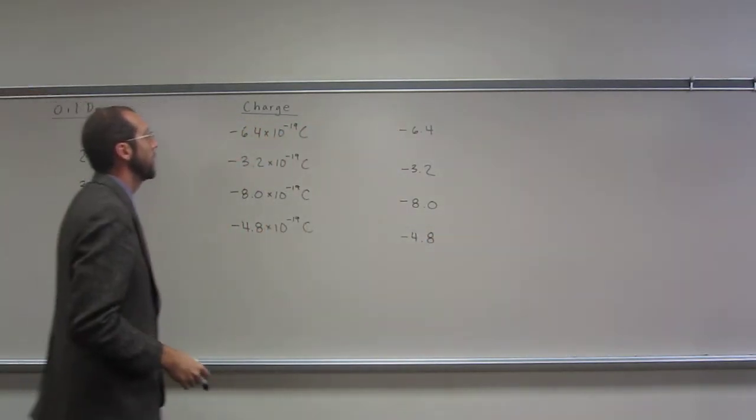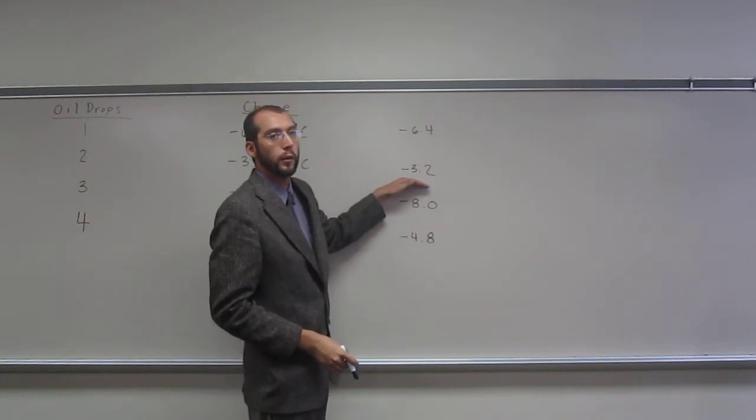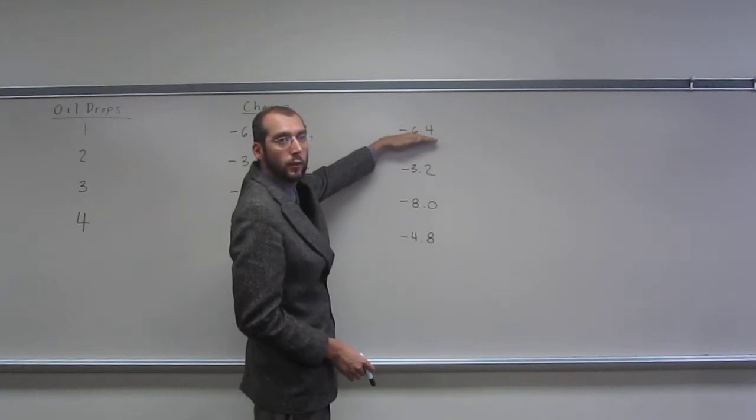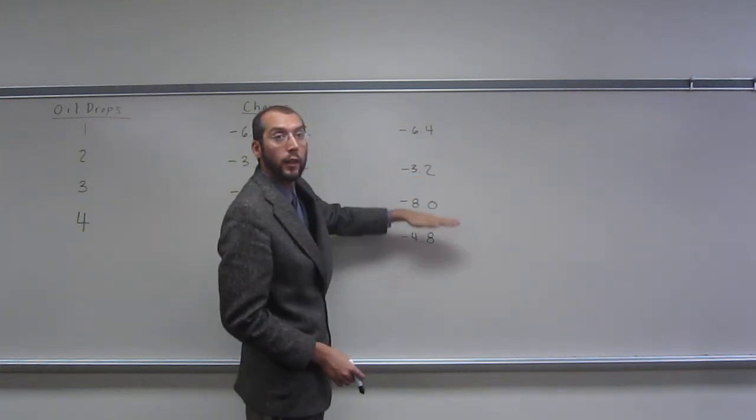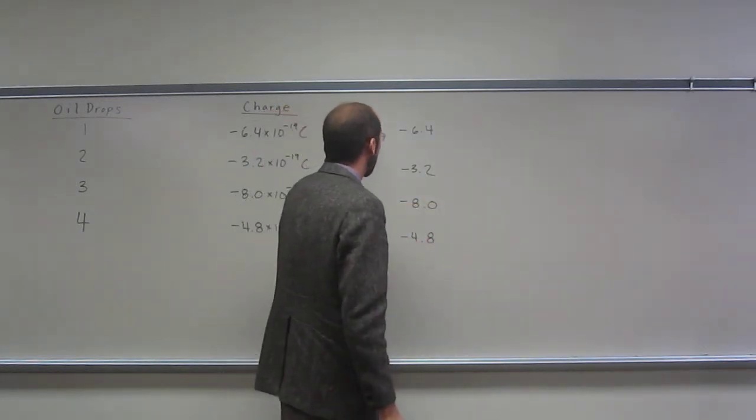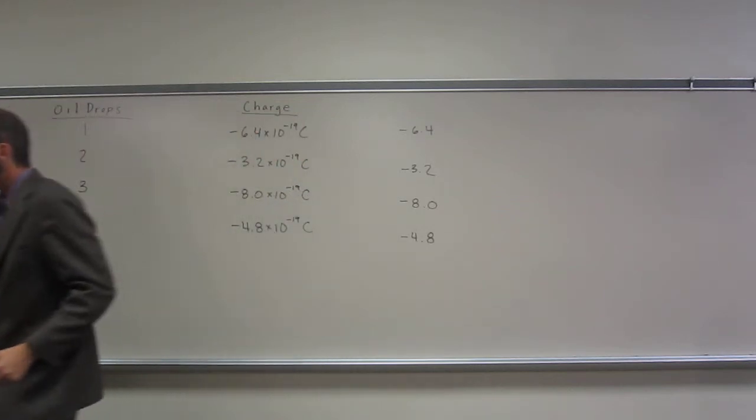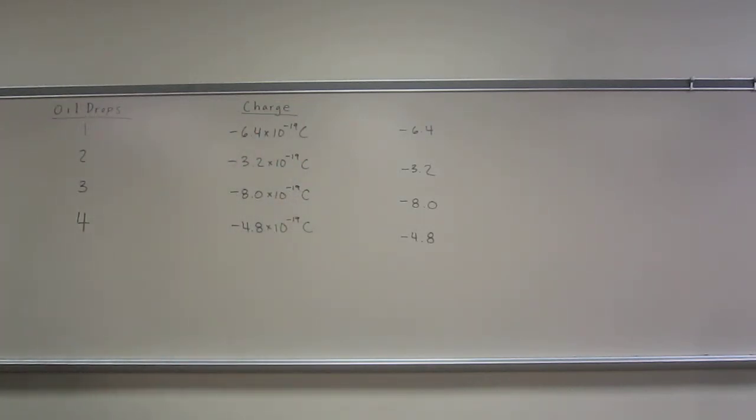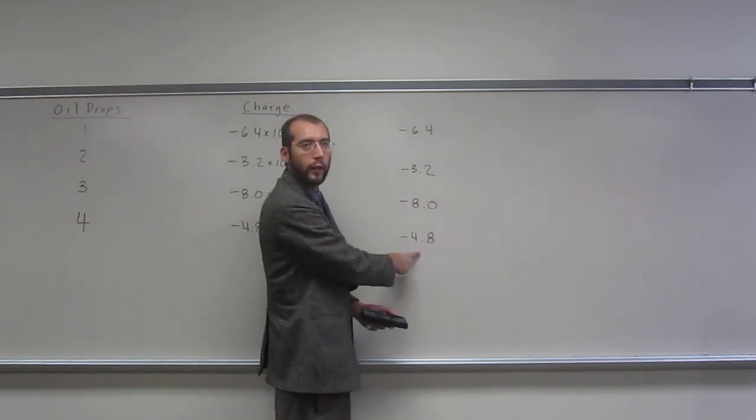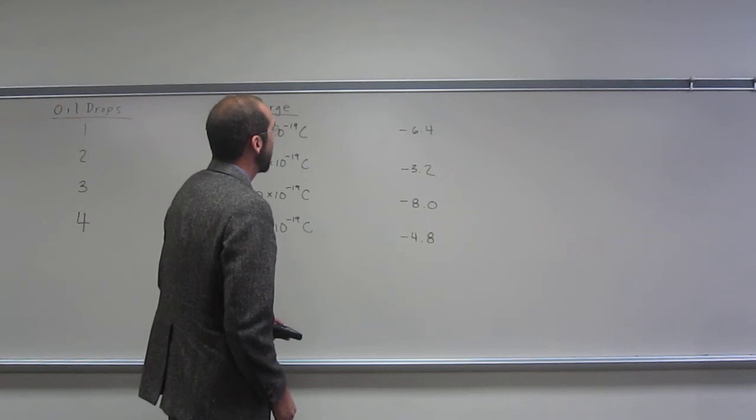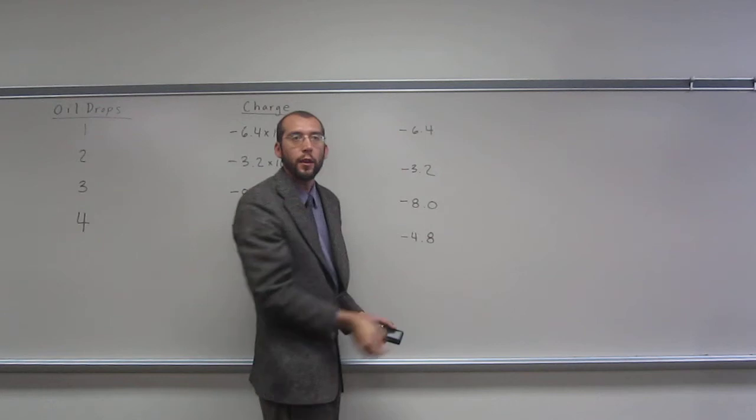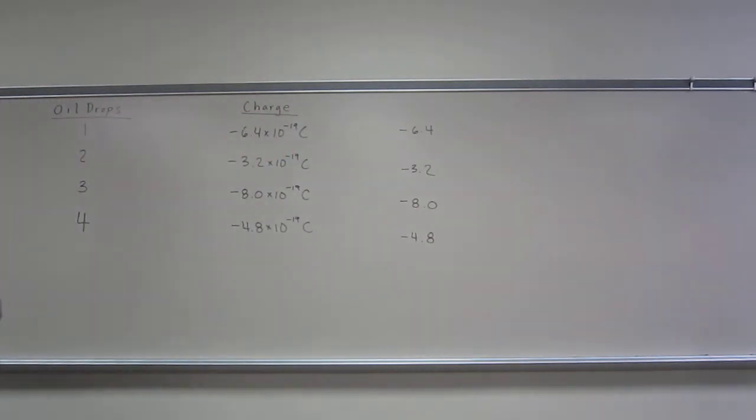So now I guess what I would do is look at the smallest number and see, can I multiply that by 2 and get the next smallest number? Can I multiply it by 4 and so on and so forth? So when I do that, what you'll find is that you can't multiply 3.2 times anything to get 4.8. And the difference between 8.0 and 6.4 is also not 3.2. So hopefully you guys have noticed that already.